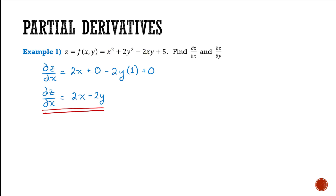To recap what we did: we looked at the derivative with respect to x, highlighting any term that has an x in it. The other terms are treated like constants, as is negative 2 and y in the term negative 2xy — those would be our coefficients, giving us 2x, while y is treated like a constant.